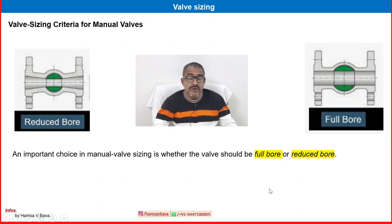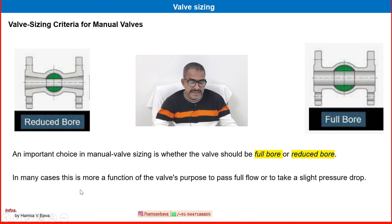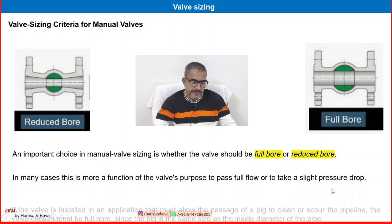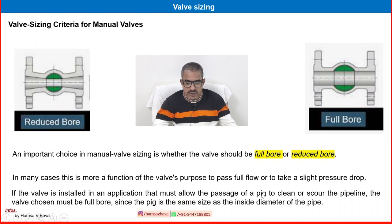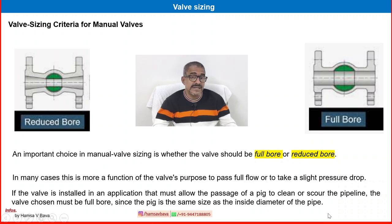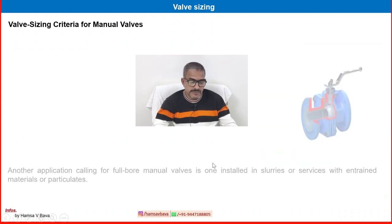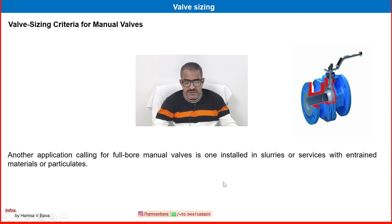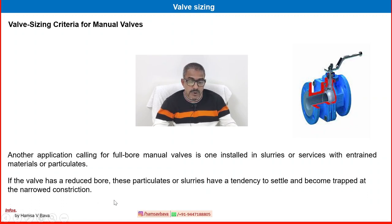Selection of a manual valve for a particular application is more a function of the valve's purpose — to pass full flow or to take a slight pressure drop. If the valve is installed in an application that must allow the passage of a pig — used for internal cleaning of a pipeline — the valve chosen must be full bore, since the pig is the same size as the inside diameter of the pipe.